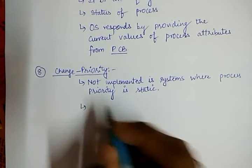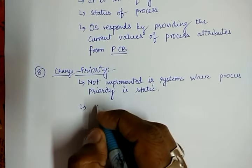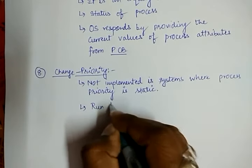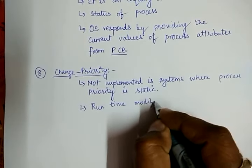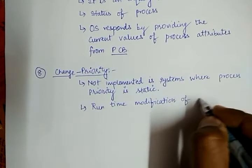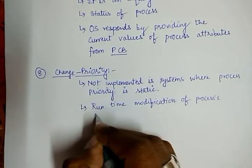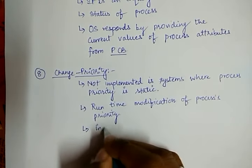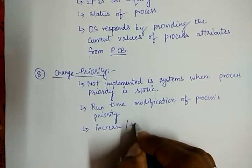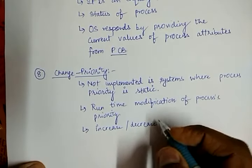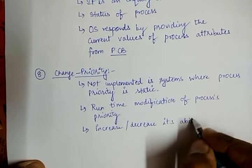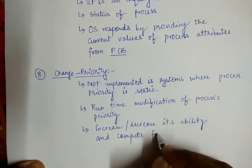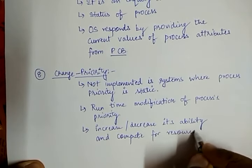So Change Priority is basically used with operating systems where process priorities are dynamic. It is used for runtime modifications of a process's priority so that it can increase or, if needed, decrease its ability to compete for the resources it wants and finish its work.